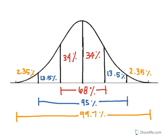The curve is separated into percentiles. One standard deviation away from the mean contains 34% of the data. Two standard deviations away from the mean contains 13.5% of the data, and three standard deviations away from the mean contains 2.35% of the data.